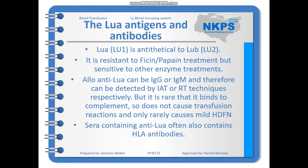LUA, also known as LU1, is antithetical to LUB. It is resistant to Ficin and Papain treatment but sensitive to other enzyme treatments, so it's important to note which enzyme treatment you're using in your panels. Allo-anti-LUA can be IgG or IgM and can therefore be detected by IAT or room temperature techniques respectively. It rarely binds complement, so it doesn't typically cause transfusion reactions and only rarely causes mild HDFN, which is why anti-LUA is not considered clinically significant.